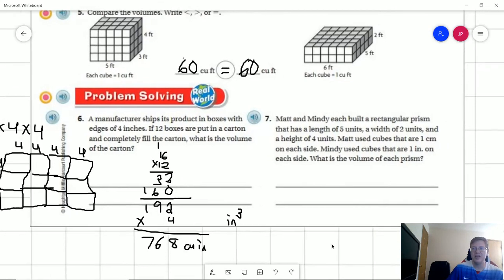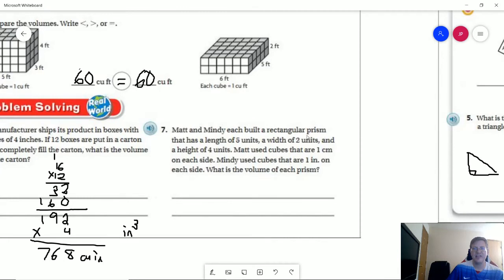Number seven, we are working with 5 times 2, which is 10 times 4, gives us 40. And so our two measurements would be 40 centimeters cubed, or cubic centimeters. And then the other one would be 40 inches cubed.